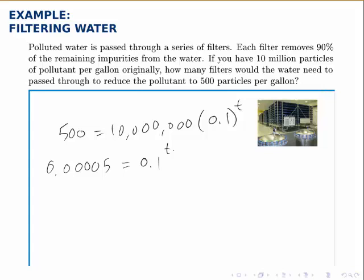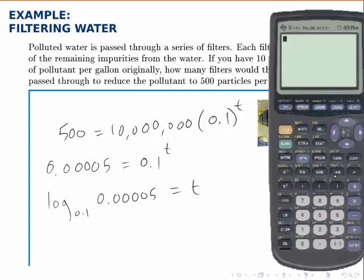Then rewriting this as a logarithmic equation, we get log base 0.1 of 0.00005 equals T, and now we just need to evaluate this logarithm. To do that we'll use the change of base formula on the calculator: log of 0.00005 divided by log 0.1.